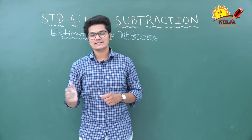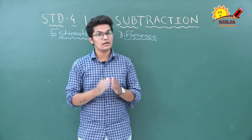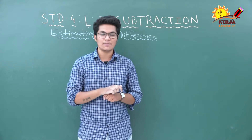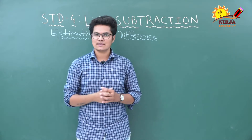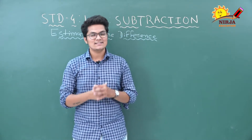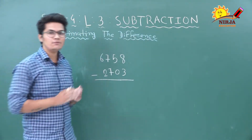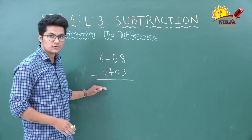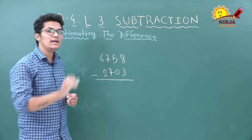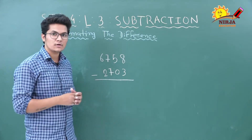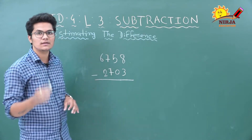Our last topic is estimating the difference. We will see how to do estimation in subtraction. In this example, we need to find both the actual difference and the estimated difference. For estimation, we round off the numbers to the nearest thousand.